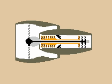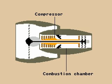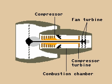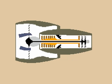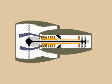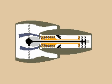The main parts of the engine include the compressor, combustion chamber, and two turbines. The compressor sucks in air, compresses it, and forces it into the combustion chamber.